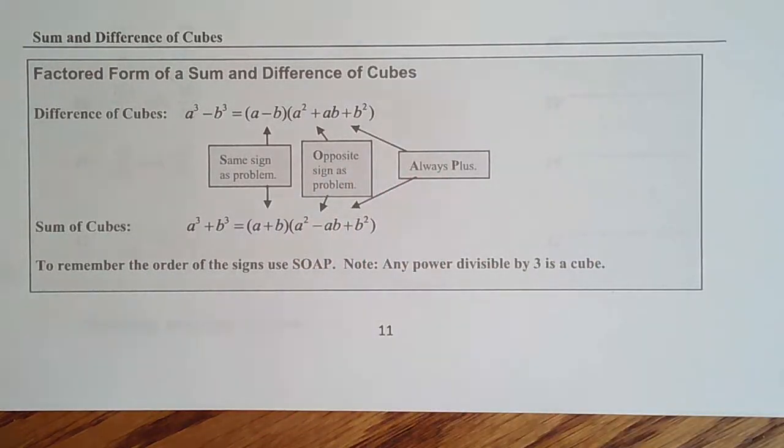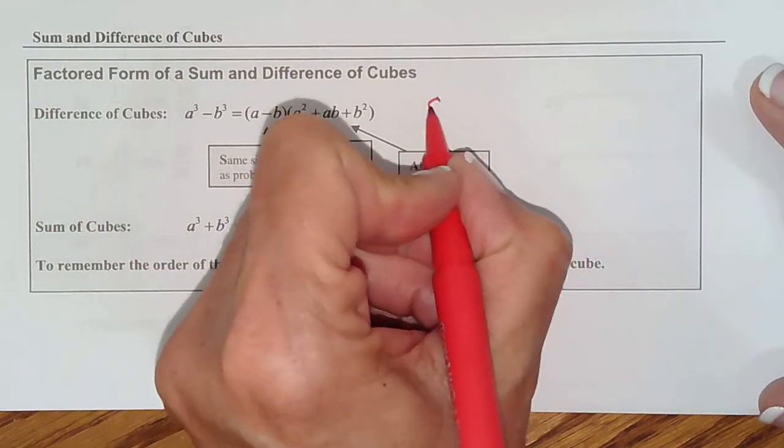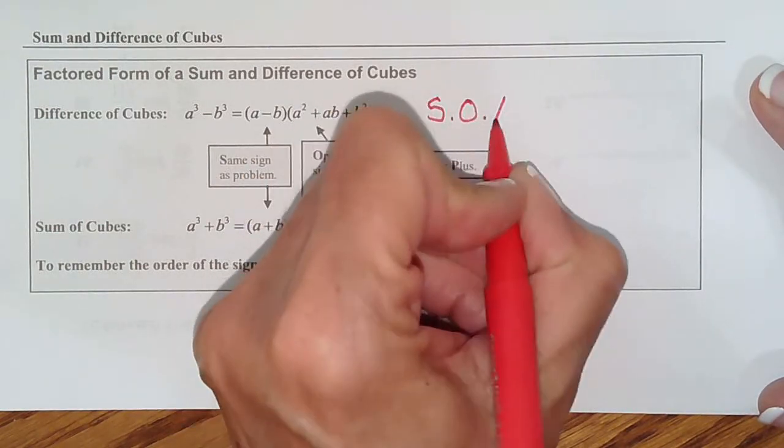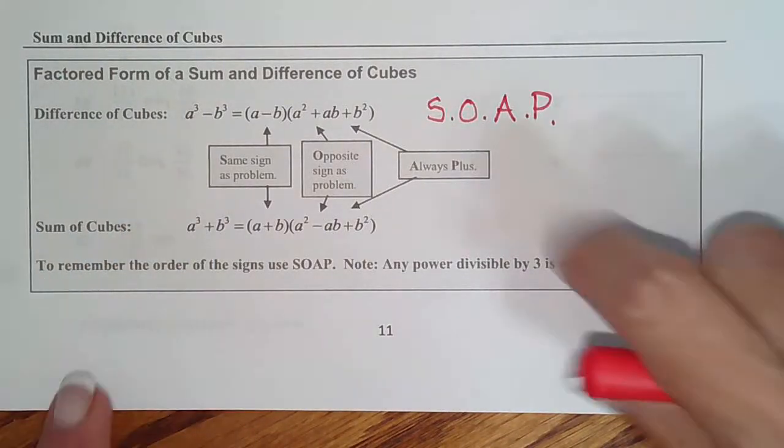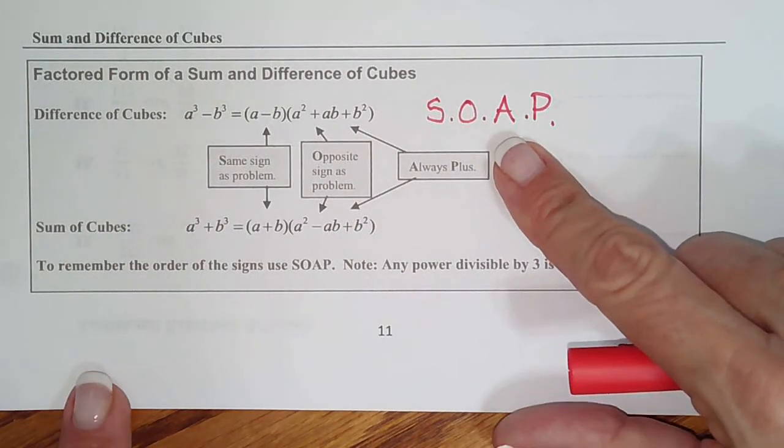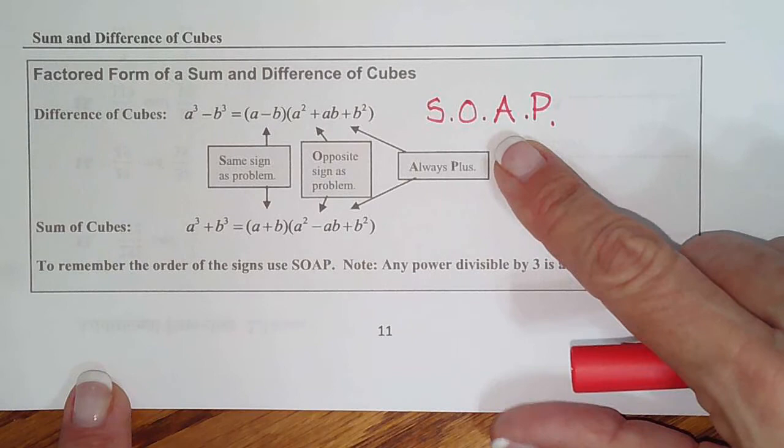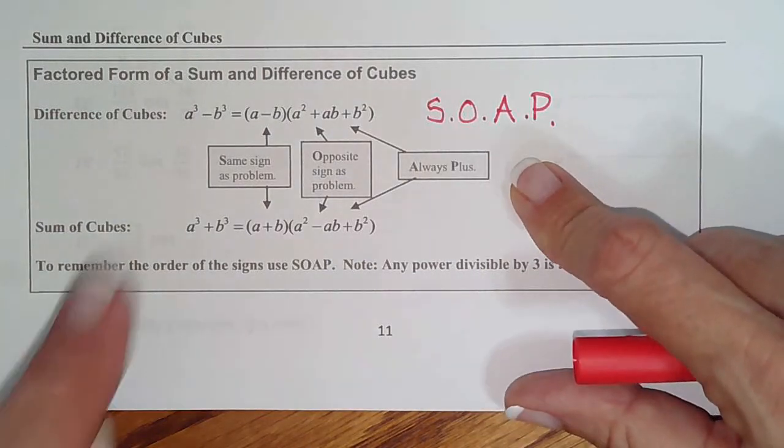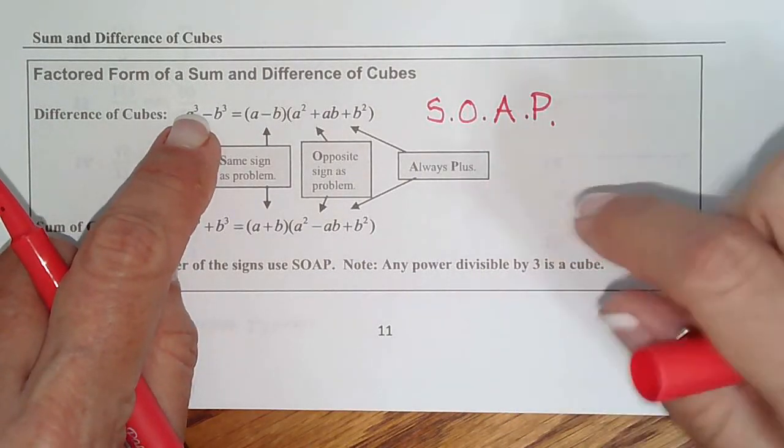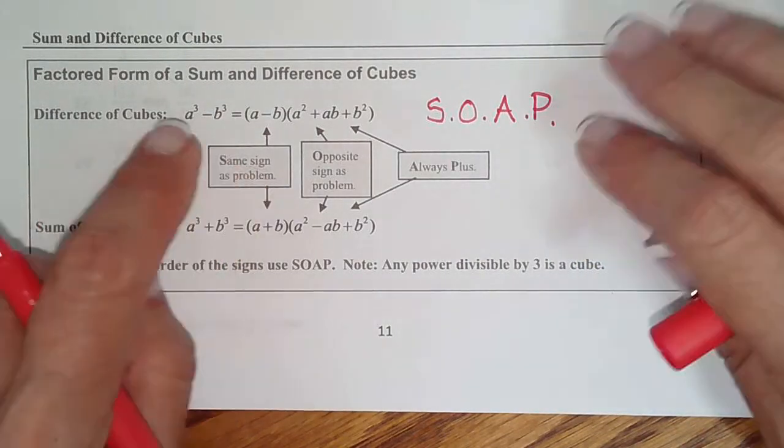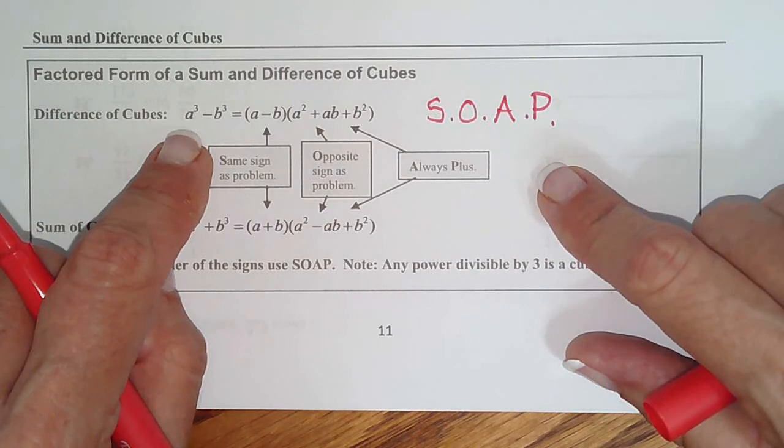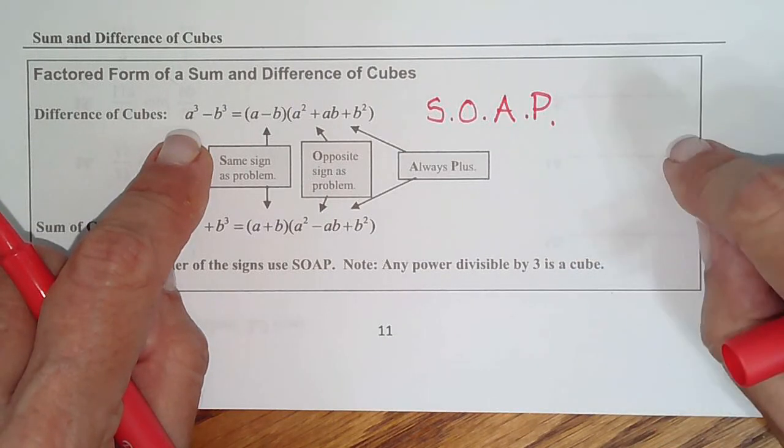So this is my invention I'll have you know. Soap. My class and I came up with that. So soap tells us how to do our signs. So anytime we see a cube, we use soap. And students like soap so much they try to do it all over the test. Don't do it all over the test. It has to be a cube. Cube means the exponents will be 3, 6, 9, 12. So multiples of 3.